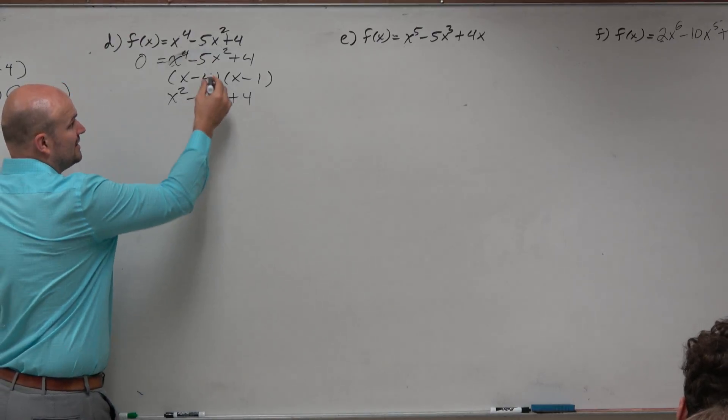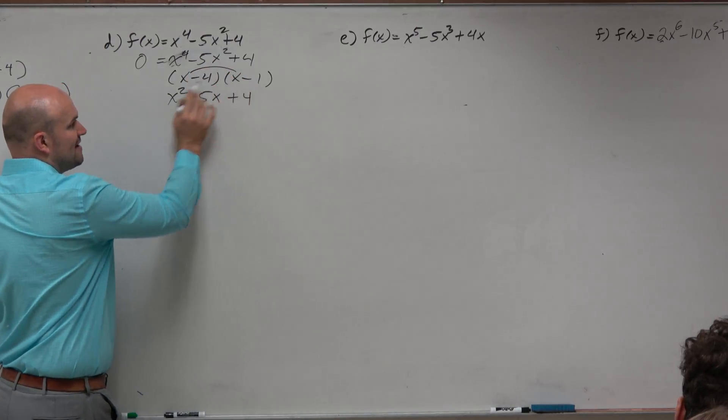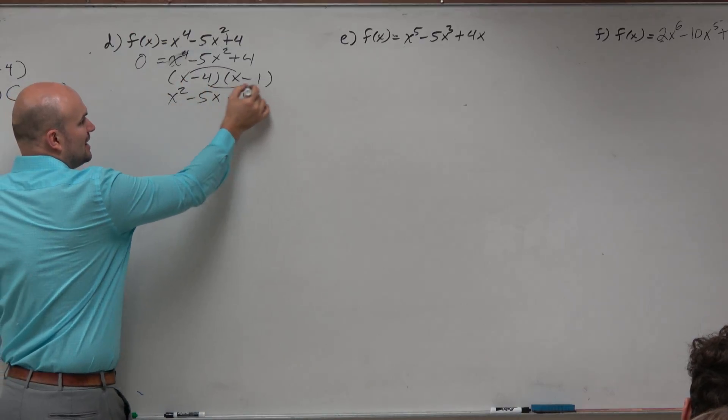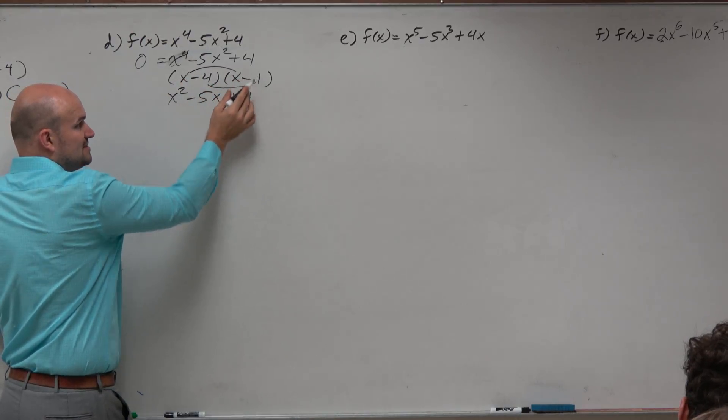So remember, the key important thing, guys, is the first two terms of your factors multiply to be x squared. x times x gives you x squared. The last two terms gives you the last term. Negative 4 times negative 1 equals 4.